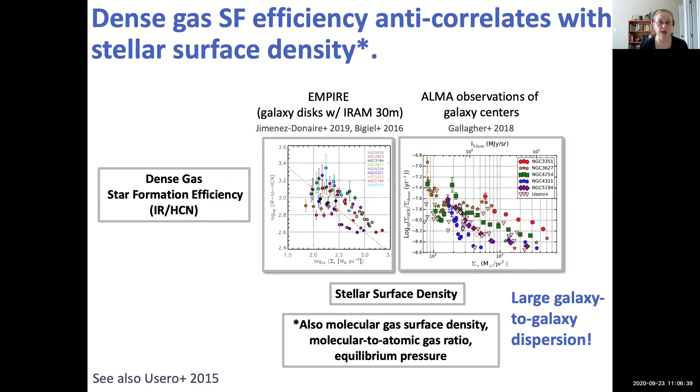You can also look at dense gas star formation efficiency. So if you compare the IR to the HCN emission and the stellar surface density, you find they're anti-correlated. As you go to high stellar surface densities, your dense gas star formation efficiency drops. But again, there's a general trend, but also a large scatter between galaxies for both of these.